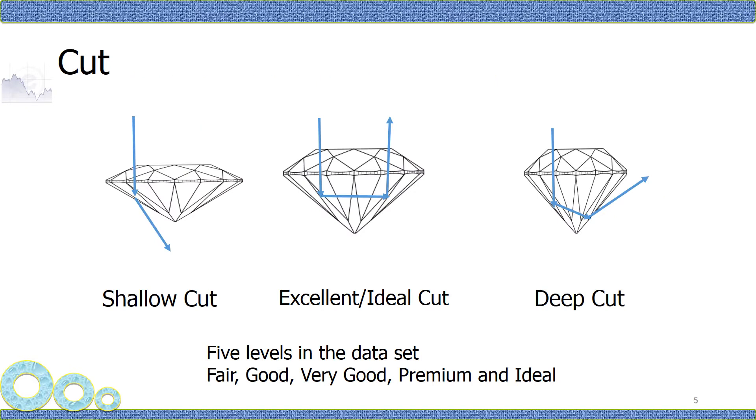First variable is cut. As you can see, shallow cut and deep cut do not reflect light correctly, so that the diamonds would not appear as bright as when they are in excellent and ideal cut. There are five levels in the dataset: Fair, good, very good, premium, and ideal.